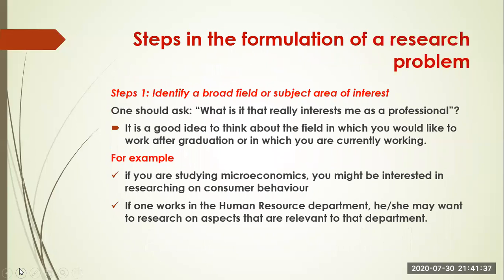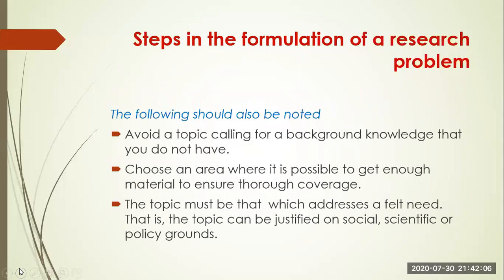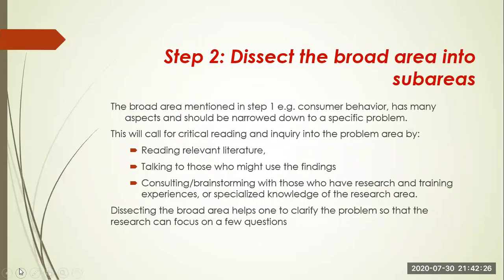What are the steps in formulating a research problem? Number one, you must identify a broad field or subject area of interest. This should not be a problem since it should be something related to what you are studying or related to your profession. You should avoid topics that require knowledge you don't have, and choose an area where you know you will get enough material, since you will have to carry out a literature review. Once you've identified the broad area, you dissect it into sub-areas.